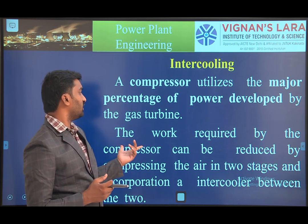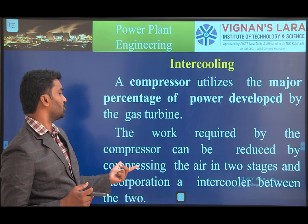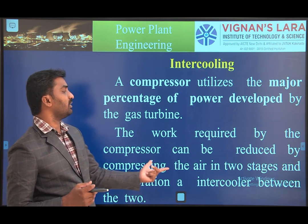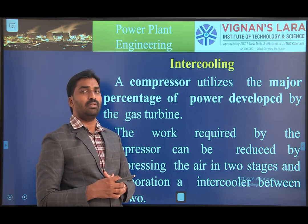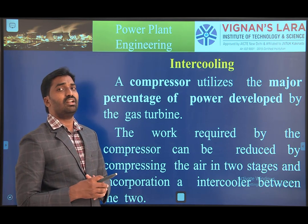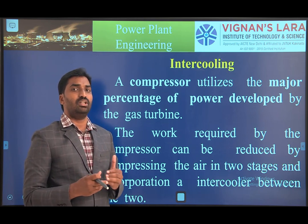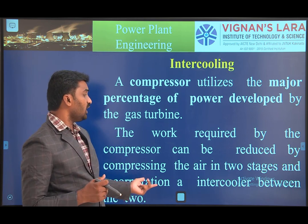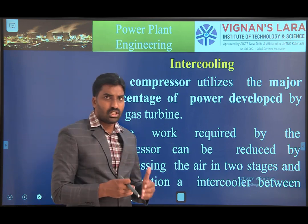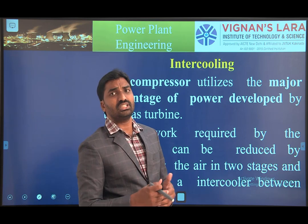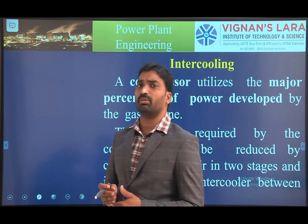To reduce the work required by the compressor, the compression of air is done in two stages. This automatically reduces the work of compression. An intercooler is placed between the two compressors. We use a two-stage compressor: one is the low pressure compressor and the second is the high pressure compressor.